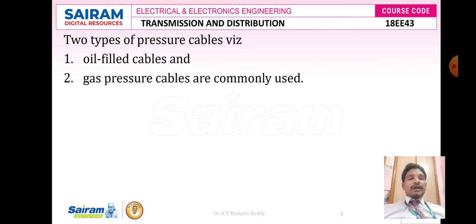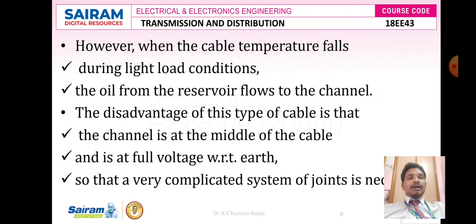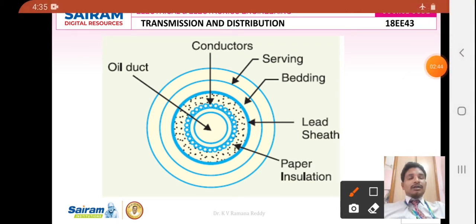Pressure cables are majorly classified into two types. One is called as oil filled cables and another one is called as gas pressure cables. Now we are going to discuss about the first class of pressure cables which are called as oil filled cables. In such type of cables, channels or ducts are provided in the cable for oil circulation. Let us see this figure very clearly to understand better about oil filled cables.